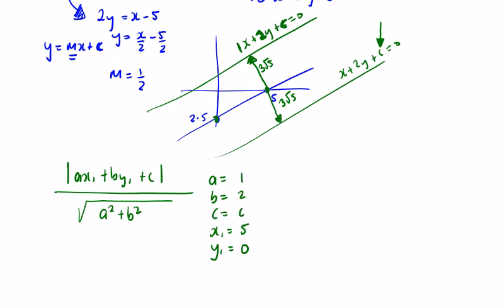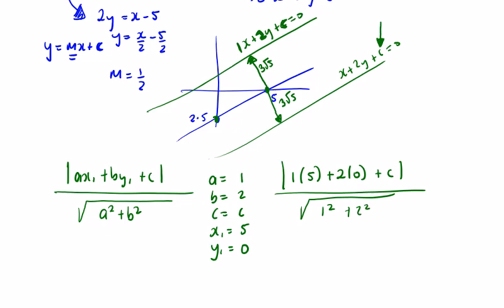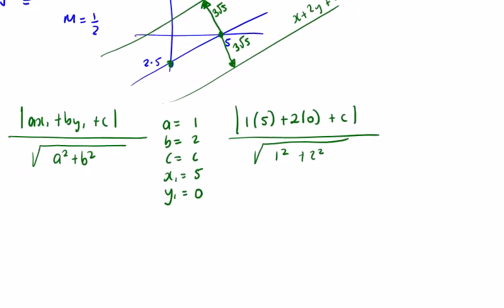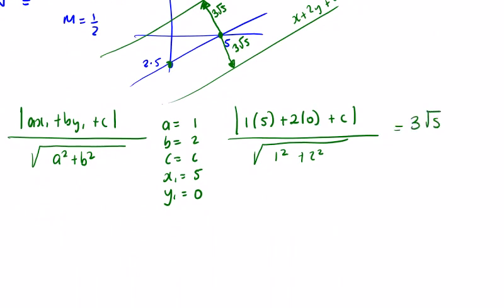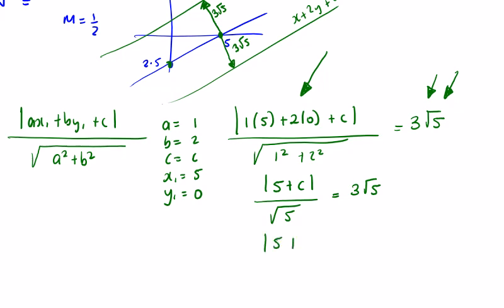Filling into the formula: the absolute value of 1 times 5, plus 2 times 0, plus c, all over the square root of 1 squared plus 2 squared, equals the distance 3 root 5. On top we get 5 plus c, and on the bottom the square root of 5 equals 3 root 5. So the absolute value of 5 plus c equals 3 times root 5 times root 5, which is 15.